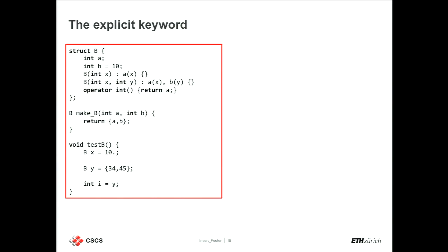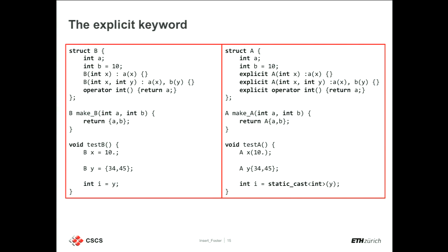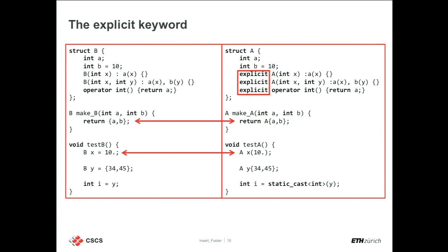With the explicit keyword, B b{10.0} still works because overload resolution finds the constructor taking an integer and converts the double. If you put explicit on all constructors and also the conversion operator, then you have to be explicit everywhere. You cannot do assignment; you can only do direct initialization. And you need static_cast<int> for explicit conversion. This is a kind of safety net — maybe you didn't want to write that conversion, and it keeps you out of trouble.